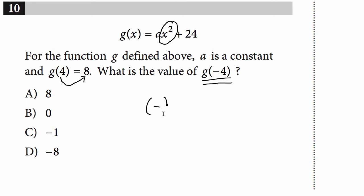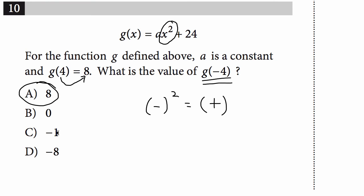So all that changed was a sign. What happens when you square a negative? You just get a positive. So that means g of 4 is going to give you the same thing as g of negative 4. You don't have to do any work. A is your final answer — you're done. So that's how you want to play it, huh?